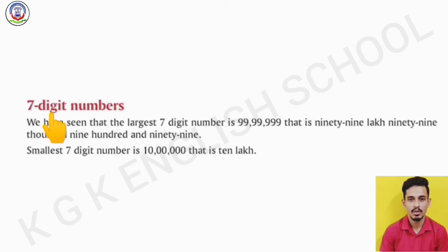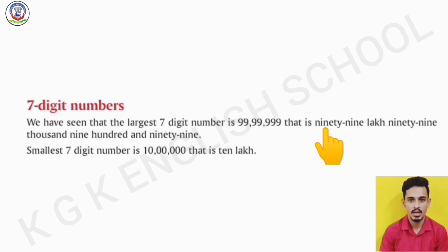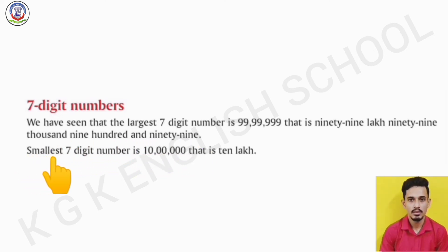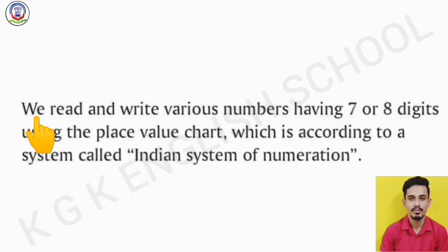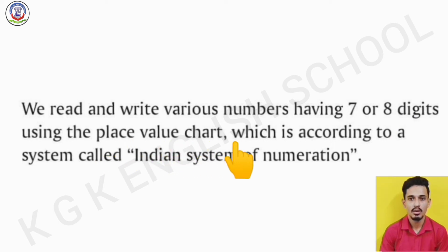Now, for 7-digit numbers: we have seen that the largest 7-digit number is seven 9's, that is 99,99,999. The smallest 7-digit number is 1 followed by 6 zeros, that is 10 lakh. We read and write various numbers having 7 or 8 digits using the place value chart, which is according to a system called the Indian system of numeration.